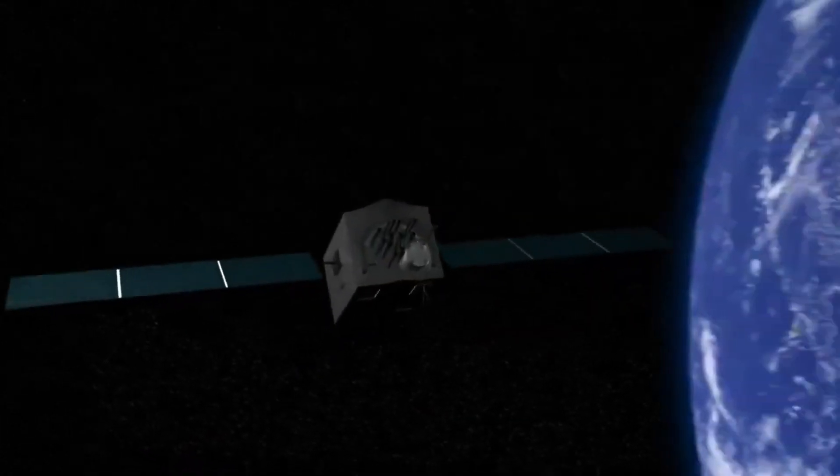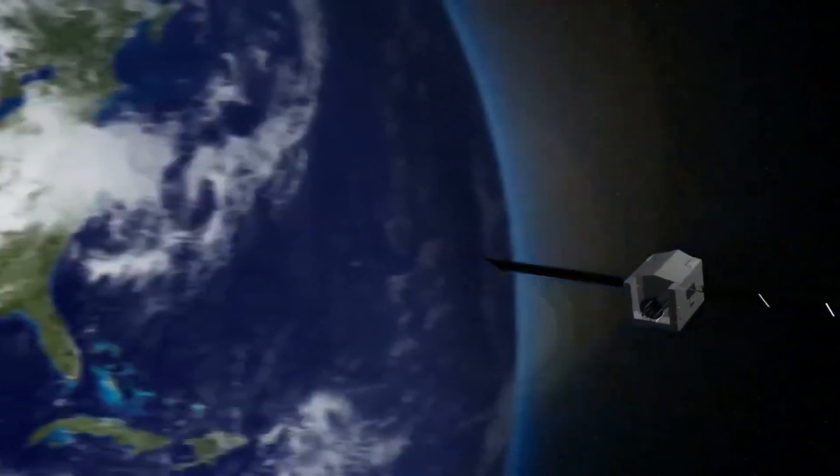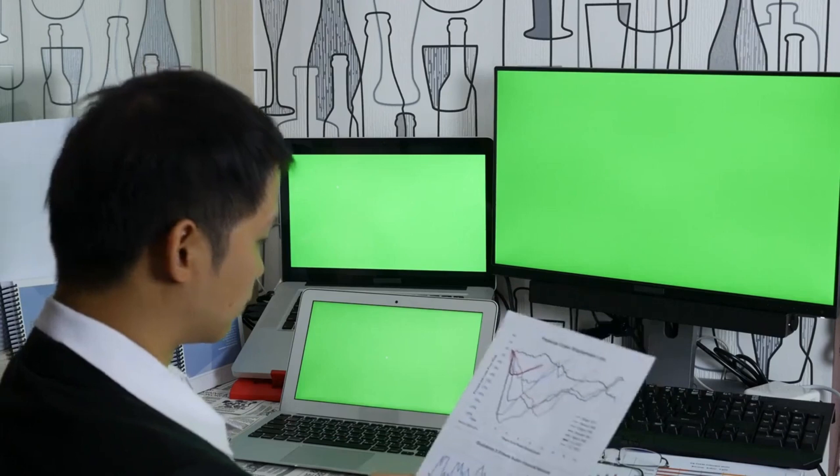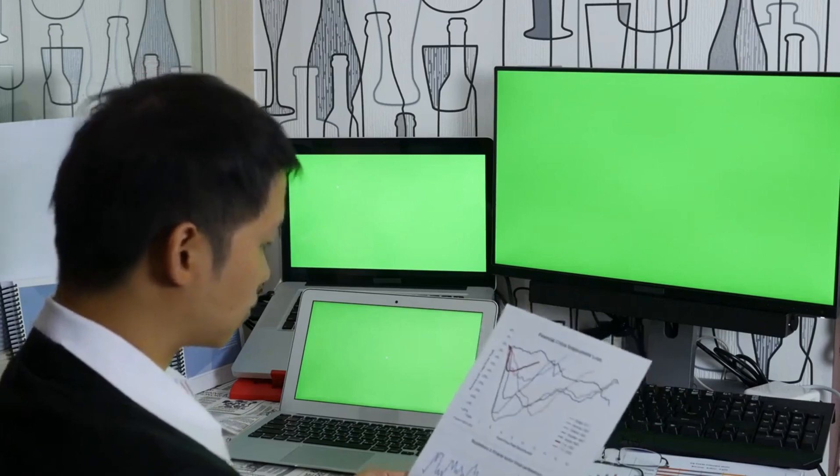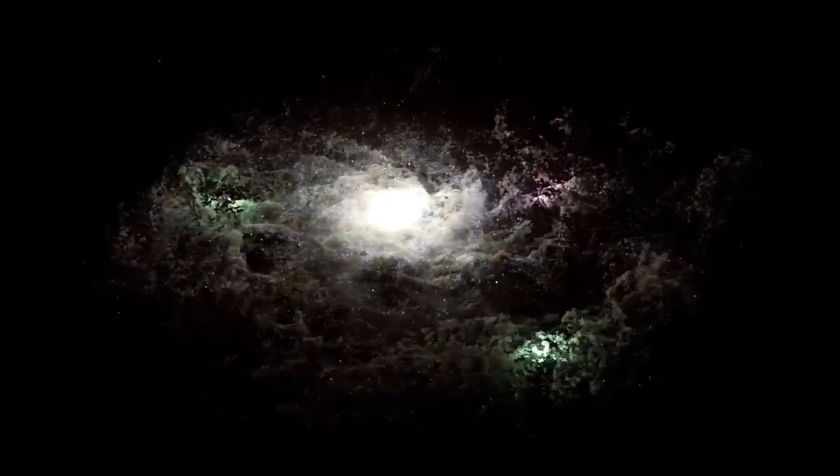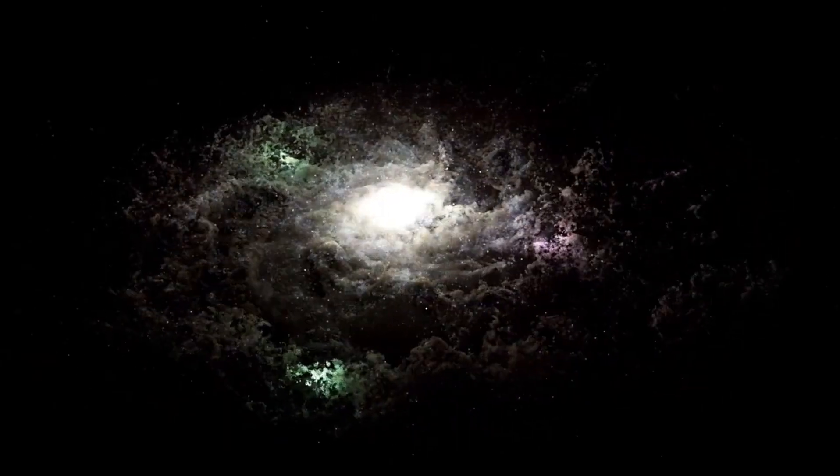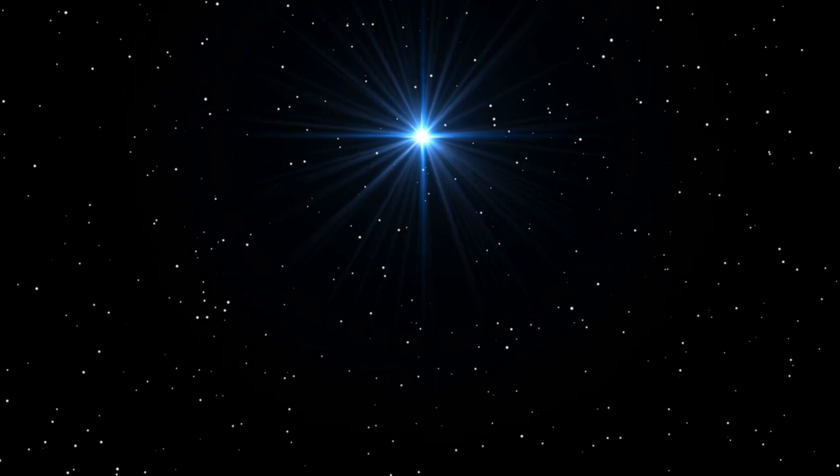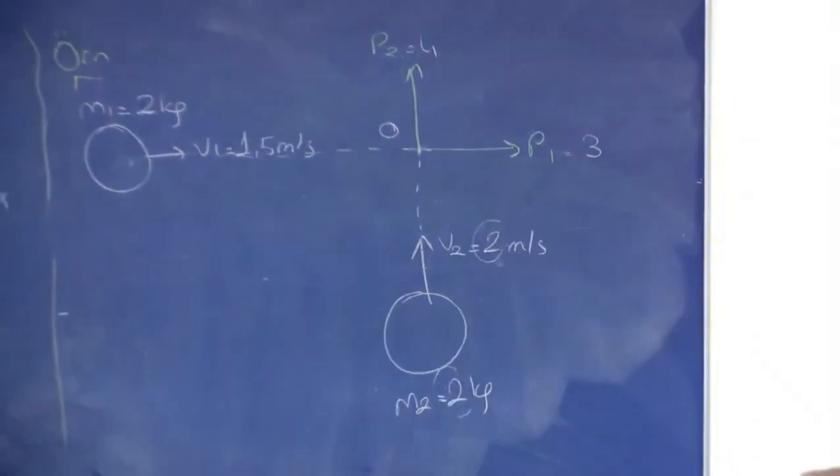Whether Betelgeuse explodes in our lifetime or thousands of years from now, its story is a testament to the beauty and complexity of the universe, and to the enduring human desire to explore and understand the world beyond our own. In the meantime, Betelgeuse remains a beacon in the night sky, a reminder of the vastness and mystery of the cosmos. For those in the Southern Hemisphere, the star is easily visible at dusk, shining brightly on the shoulder of Orion. Even in the Northern Hemisphere, Betelgeuse can be seen as the days grow shorter, a fiery red that captures the imagination and inspires wonder. As we watch and wait for the next chapter in Betelgeuse's story, we are reminded that the universe is full of surprises, and that the next great discovery is always just beyond the horizon.